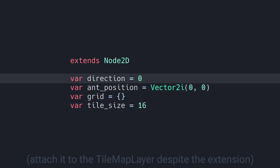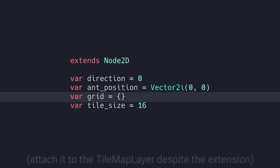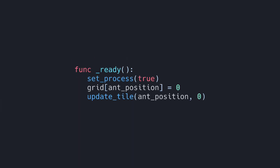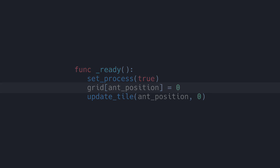We're going to set up a couple of variables: the direction, which determines where the ant is facing, and the grid, which stores the color of each tile and the ant's position. We'll also define a tile size of 16 pixels, which will make the tiles visible and easier to track. In the ready function, we'll initialize the grid and set the ant's starting position.